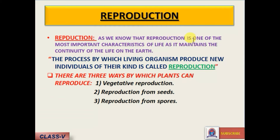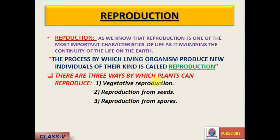Reproduction is one of the most important characteristics of life, as it maintains the continuity of life on Earth. The process by which living organisms produce new individuals of their kind is called reproduction. There are three ways by which a plant can reproduce: number one, vegetative reproduction; number two, reproduction from seeds; number three, reproduction from spores.